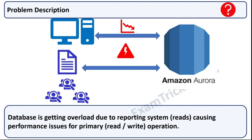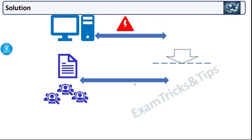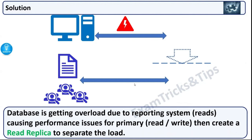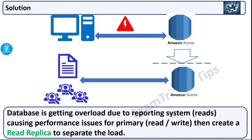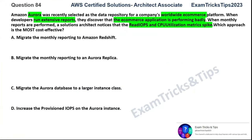What's the solution here? We have a transactional application and a reporting application both talking to the same Amazon Aurora database. This is a classic example of transaction load and reporting load on the same database, where the reporting load impacts transaction performance. The solution is to separate the load — create a replica of your Amazon Aurora database, connect the transactional OLTP load to the main instance, and connect the reporting load to the replica. This way you separate the loads and the OLTP performance problem disappears.